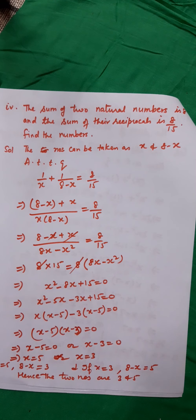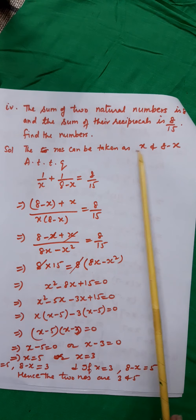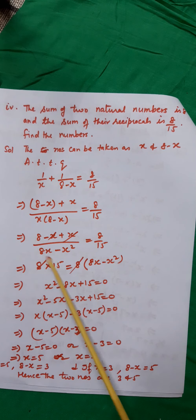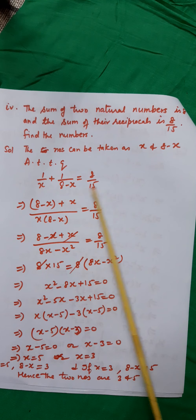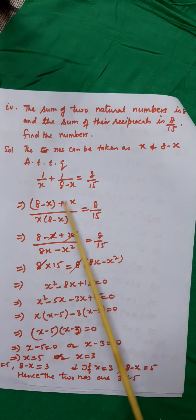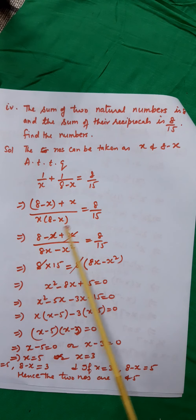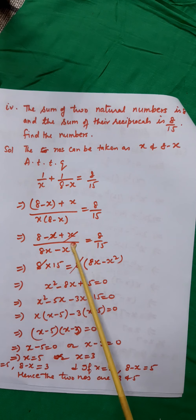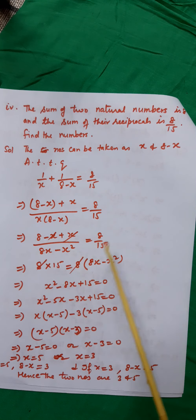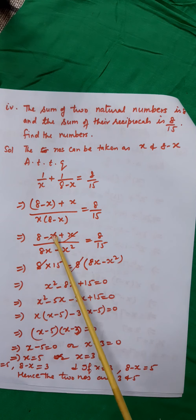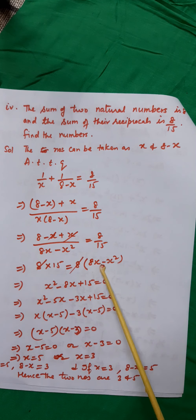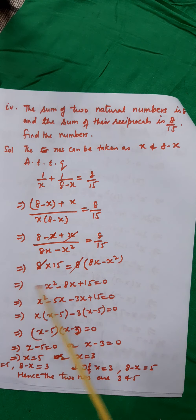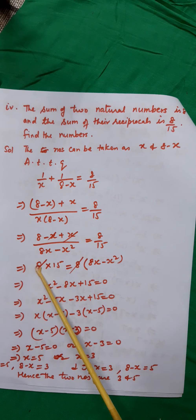Problem 4: The sum of two natural numbers is 8 and the sum of their reciprocals is 8/15 — find the numbers. Let the numbers be x and 8−x. Then 1/x + 1/(8−x) = 8/15. Using the butterfly method: (8−x+x) / [x(8−x)] = 8/15, which gives 8 / (8x − x²) = 8/15. Cross-multiplying: 8×15 = 8(8x − x²), so x² − 8x + 15 = 0.